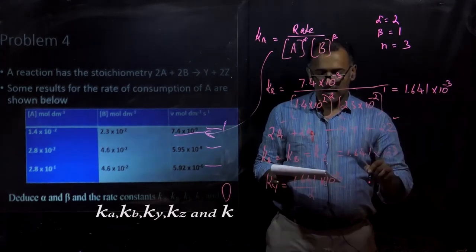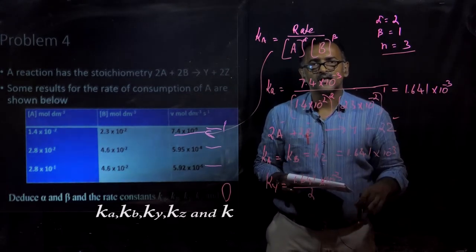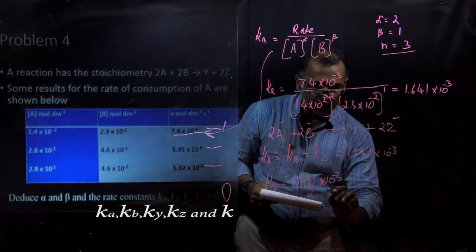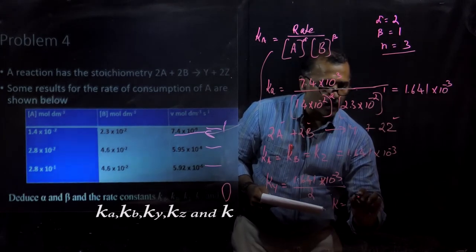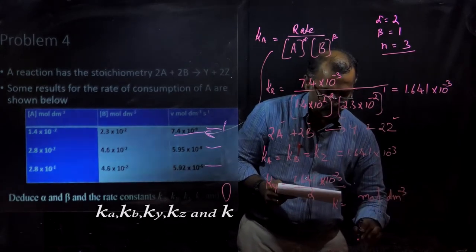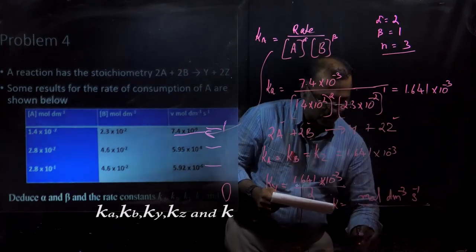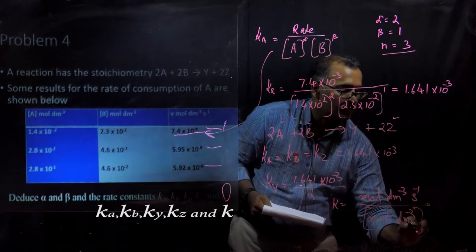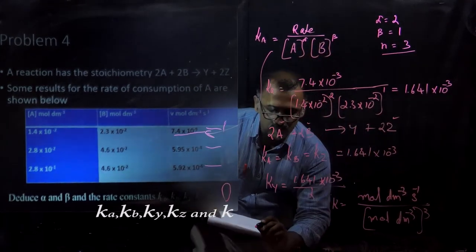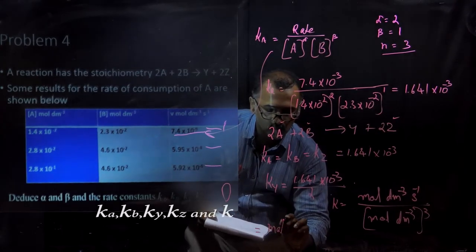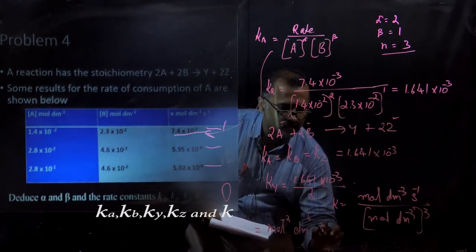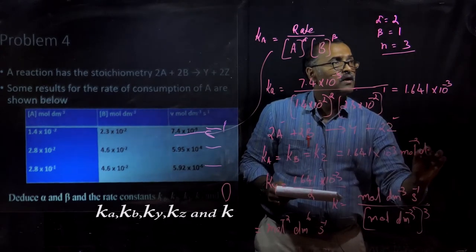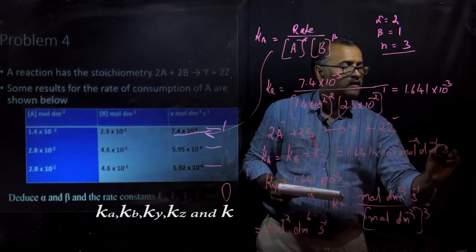Now let us find the unit of the rate constant. Since the overall order n = 3, we use: K = rate / [concentration]³. Rate has units of mol dm⁻³ s⁻¹ and concentration has units of mol dm⁻³ to the power of 3. Therefore the unit of K is mol⁻² dm⁶ s⁻¹.